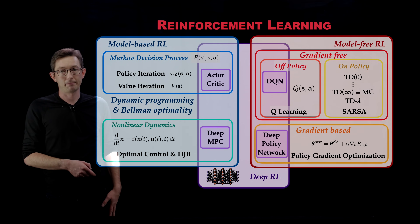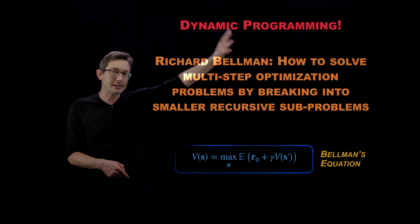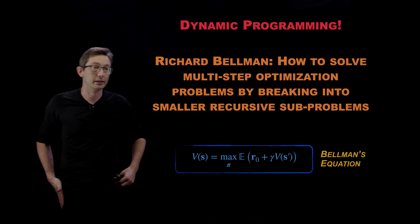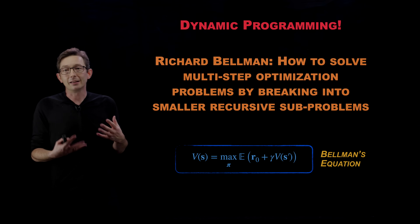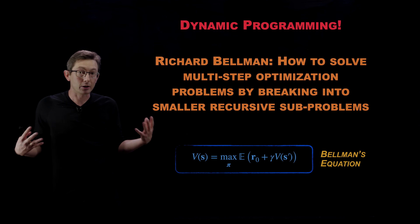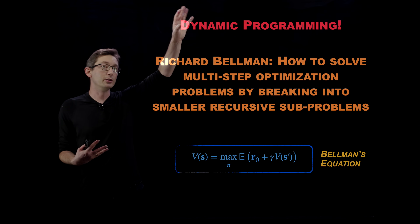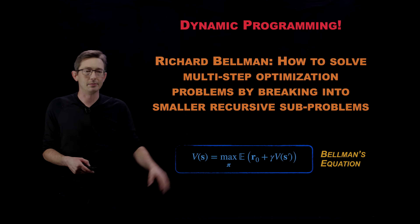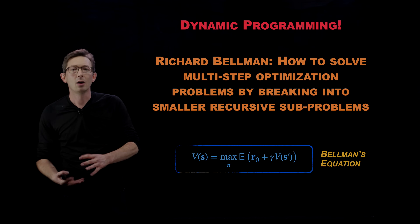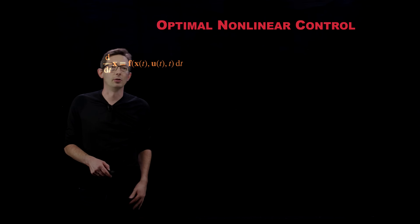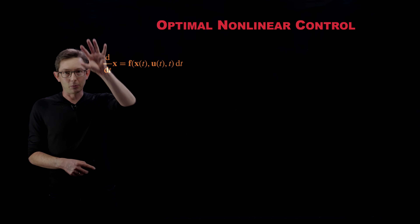This fits into the idea that Richard Bellman put forward in the 1950s: you can view the optimal nonlinear control problem as part of a broader class of optimization where you can use ideas from dynamic programming. This is Bellman's equation that we've seen before in reinforcement learning — we're going to see something like that for these differential equations. So optimal nonlinear control: we're going to be working with this differential equation.